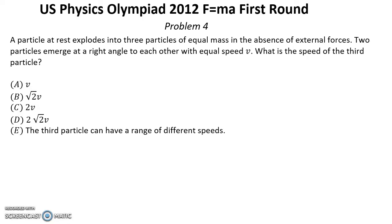Problem 4: A particle at rest explodes into three particles of equal mass. Two particles emerge at right angles to each other with equal speed v. Using momentum conservation — initial momentum is zero, so final momentum must also be zero. The momentum of the two particles is m√2 v, so the third particle's speed v' = √2 v, which is answer B.